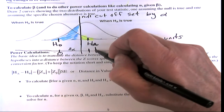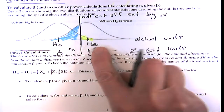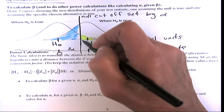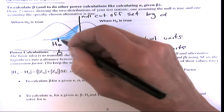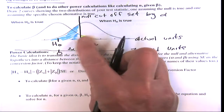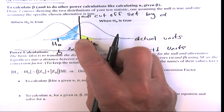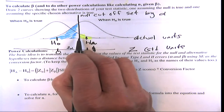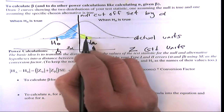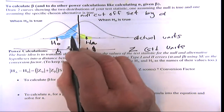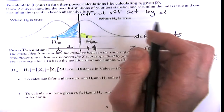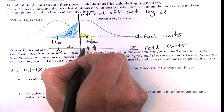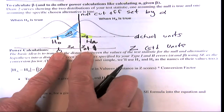From here to the null center is z_alpha (e.g., 1.65 for 5% one-tail), and from the null cutoff to the alternative center is z_beta. Together they equal z_D, the total distance. z_D is calculated as: |H_a − H_0| divided by the standard error — just like a z-score: value minus expected value over standard error.